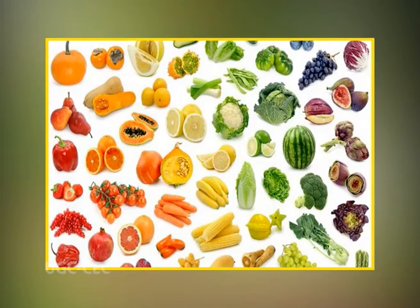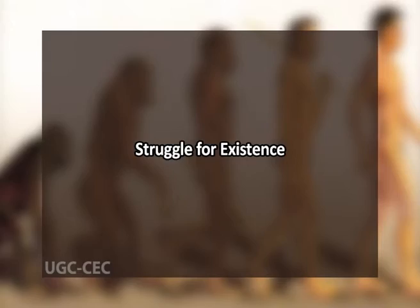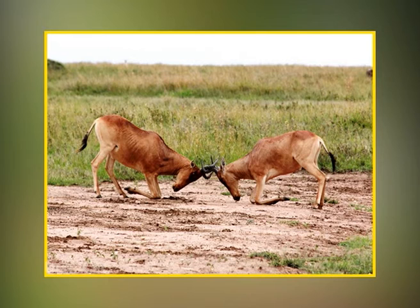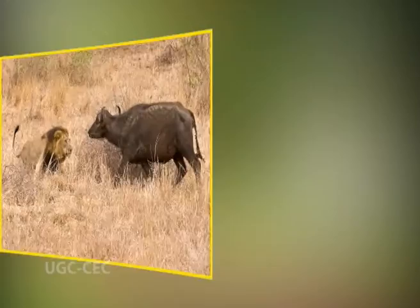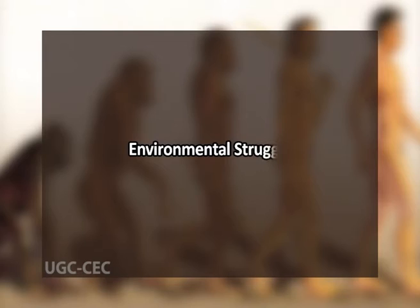Number two: limited food and space. Despite rapid multiplication of all types of species, food, space, and other resources remain limited as they increase only arithmetically. Hence these limiting factors do not allow a population to grow indefinitely. Number three: struggle for existence. This can be of three types — intraspecific struggle (between individuals of the same species), interspecific struggle (between members of different species), and environmental struggle — the struggle between organisms and environmental factors such as drought, heavy rains, extreme heat or cold, earthquakes, and disease.